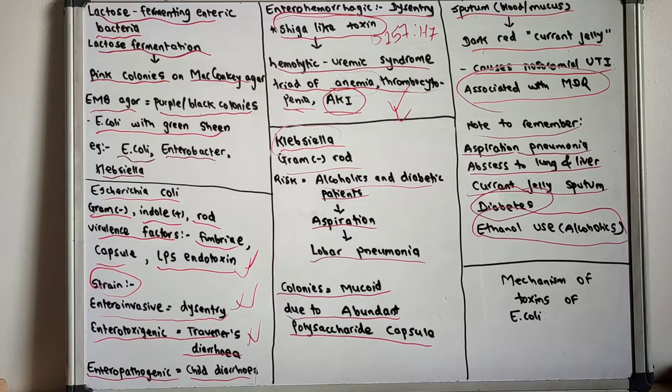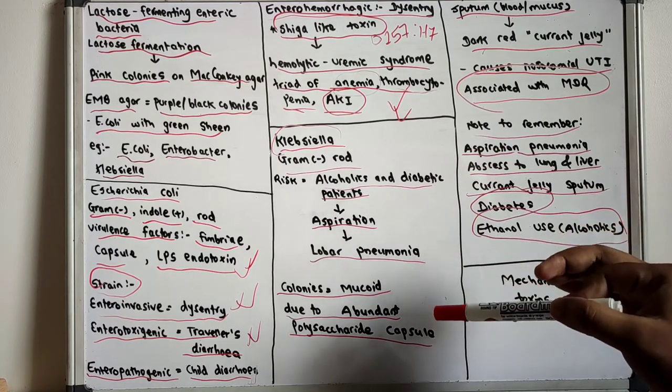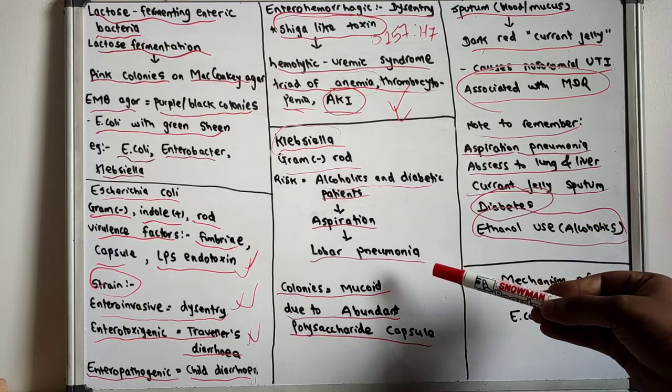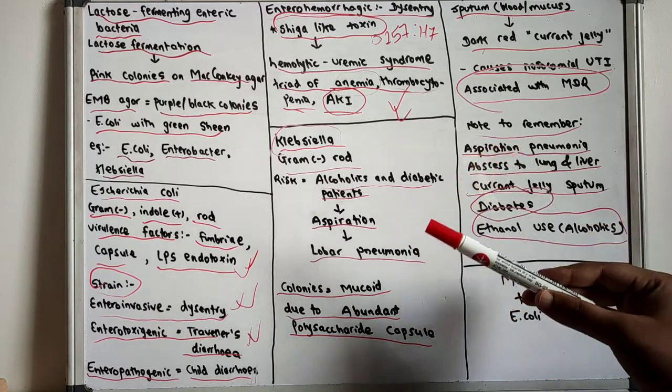We talked about various strains like enteroinvasive, enterotoxigenic, enteropathogenic, and enterohemorrhagic. We also talked about Klebsiella. The colonies of Klebsiella appear as mucoid and it mainly causes aspiration pneumonia.